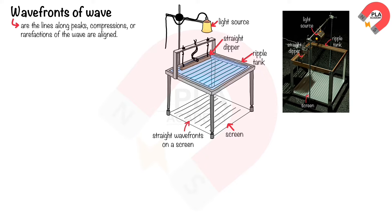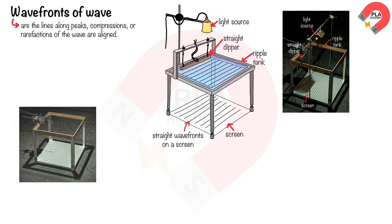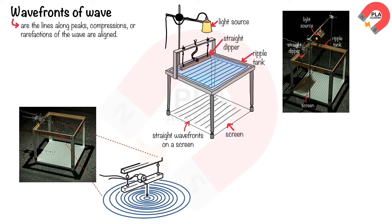A straight dipper can be used to create straight wavefronts in a ripple tank. When the dipper is vibrated up and down, it creates a series of parallel wavefronts. The screen below the ripple tank is used to observe the wavefronts of the water wave. A stroboscope or video camera is used to observe slow motion of the wavefronts on the screen. A small sphere dipper can be used to create circular wavefronts in a ripple tank.